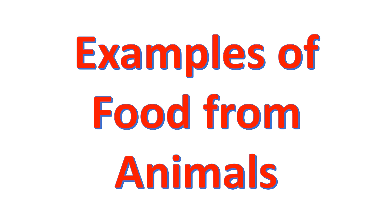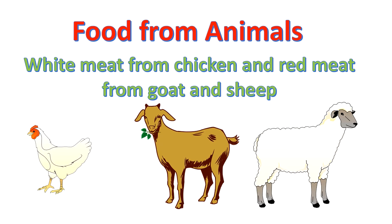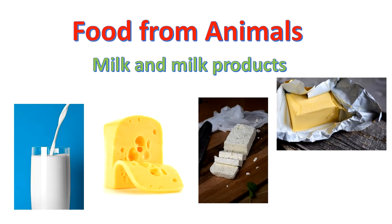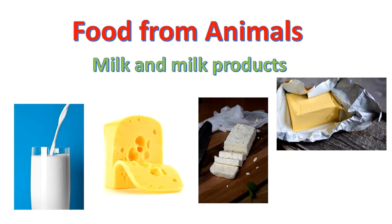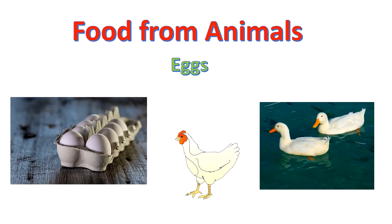Now let's see examples of food which we get from animals. We get white meat from chicken and red meat from goat and sheep, and we eat the meat as our food. We get milk and milk products such as curd, cheese, paneer, butter and cream from cows and buffaloes. We get seafood from animals such as fish, crabs and shellfish. We also get honey from honeybees and eggs from hens, ducks and some other birds like ostrich.